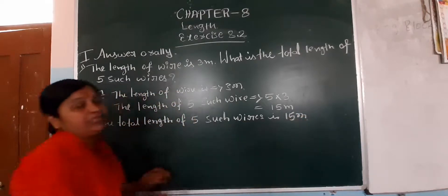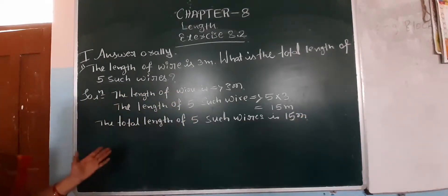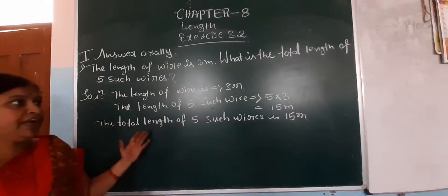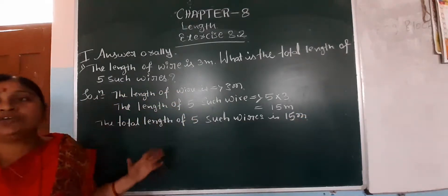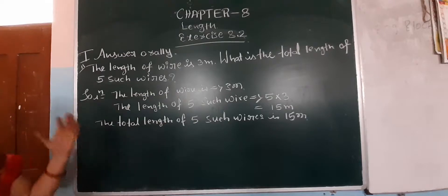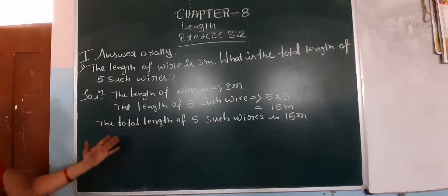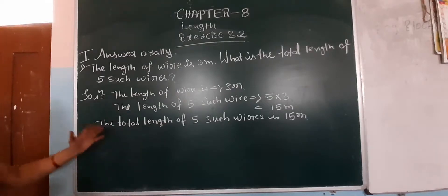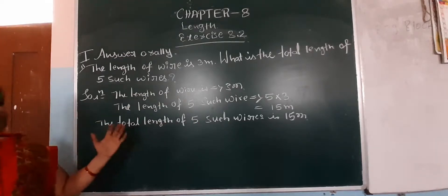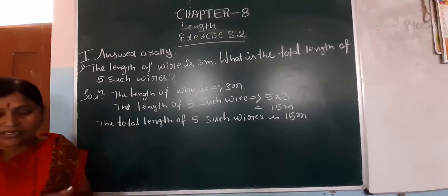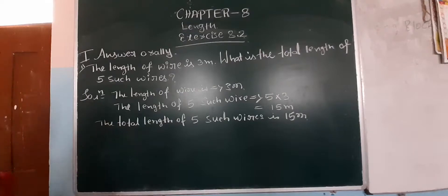They gave one wire length; you should find the 5 such wires total length. The total length of 5 such wires is 15 meter. Now we are going to start the second one.